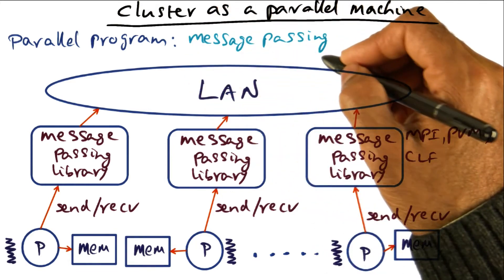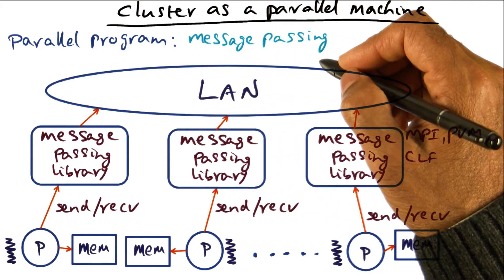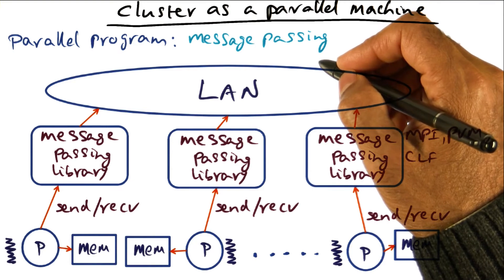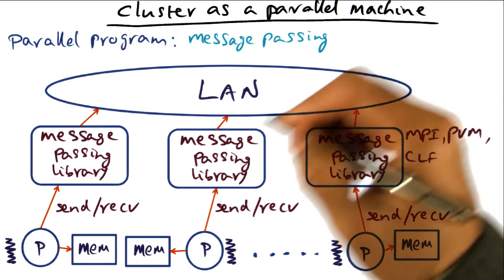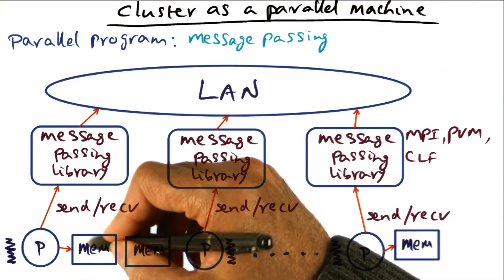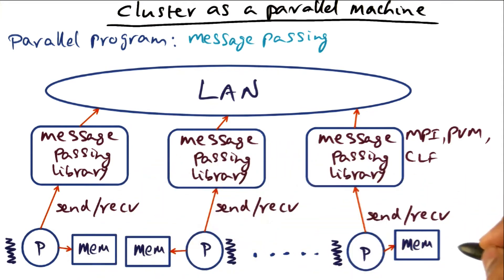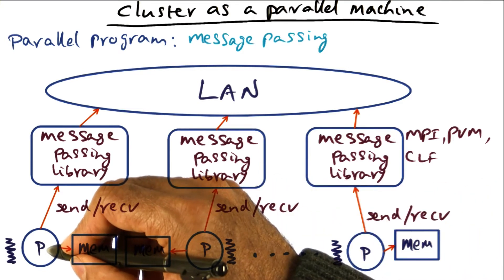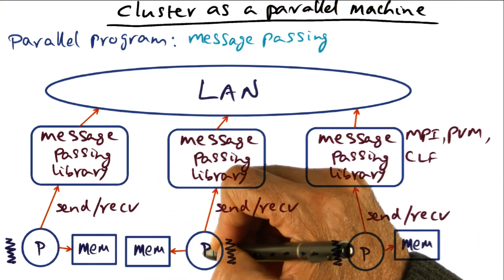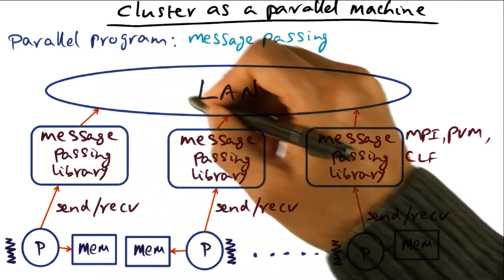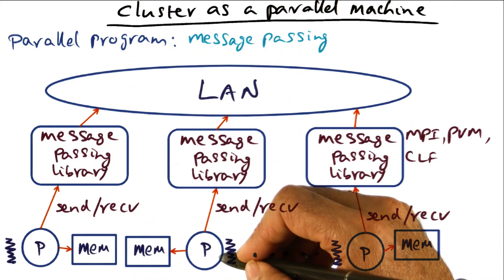So this message passing style of explicitly parallel program is true to the physical nature of the cluster. The physical nature of the cluster is the fact that every processor has its private memory, and this memory is not shared across all the processors. So the only way a processor can communicate with another processor is by sending a message through the network that this processor can receive.